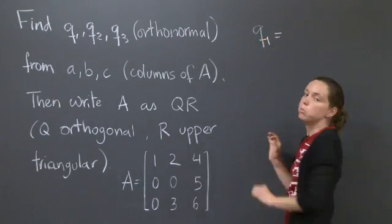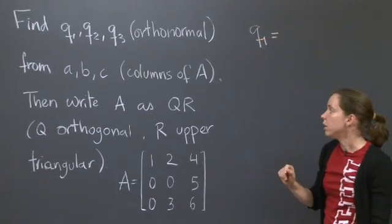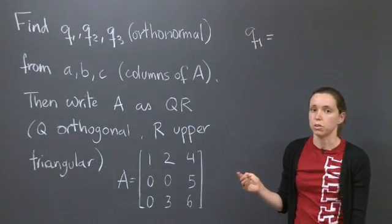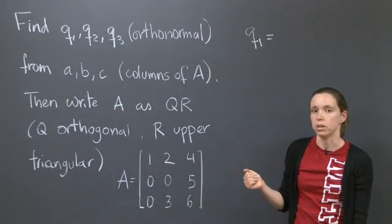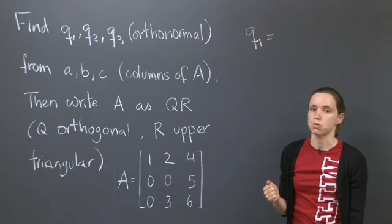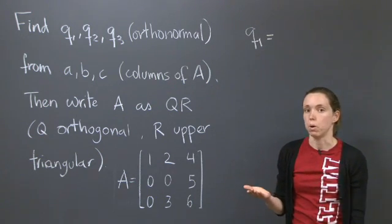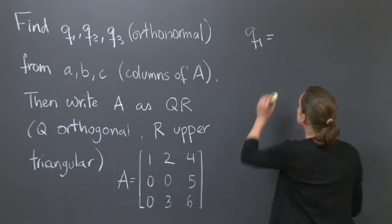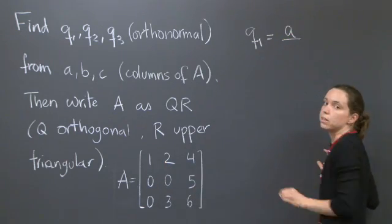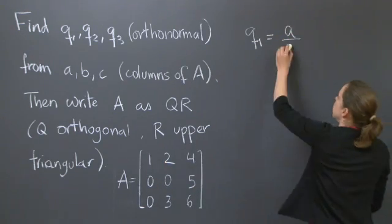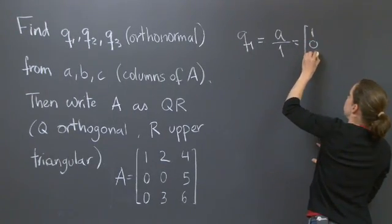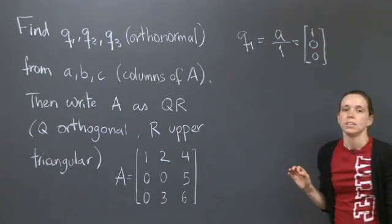Let's actually do it. We want to find Q1. Well, to find Q1, start with a and make it orthonormal to the previous ones. There's no previous ones, so that's very easy. Direction of a is fine, and you just need to ensure that your vector has length 1. Well, a is the vector 1, 0, 0, so you should divide it by its length, but its length is 1, so this is simply 1, 0, 0. Q1 is done.